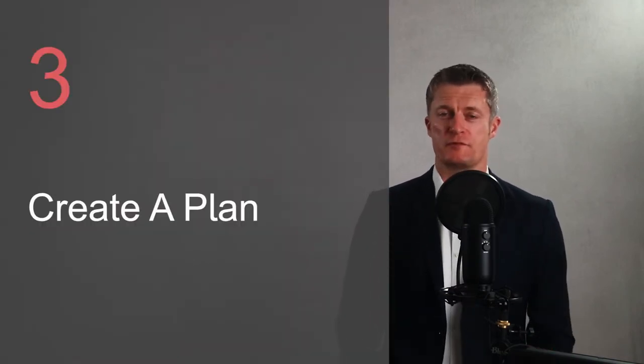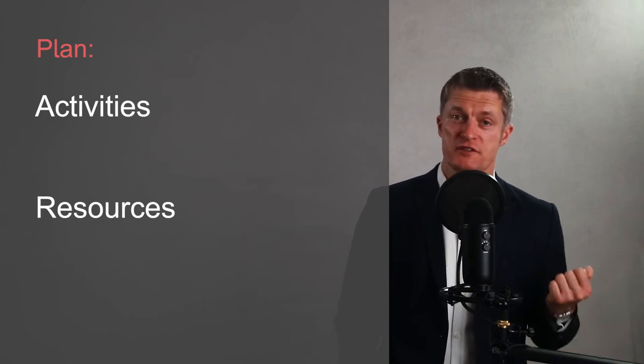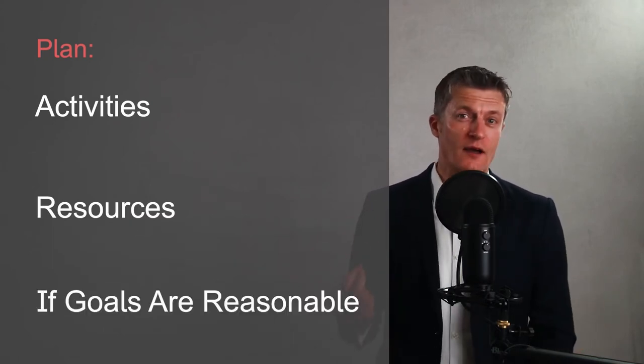The third step when setting objectives with your manager is to create a rough plan of how you would reach your objectives. Having goals is great if you've got a reasonable plan of how to get there. With a plan you know firstly the activities you need to undertake, secondly the resources you need to undertake them, and thirdly if the goals or outcomes are reasonable or not. Don't go to town on the planning at this stage, but do have a rough idea of the activities and resources needed for each of the objectives that you choose.